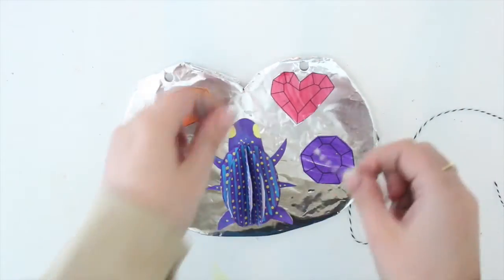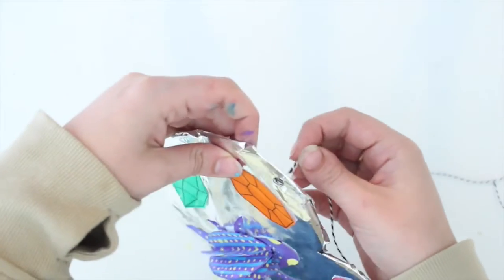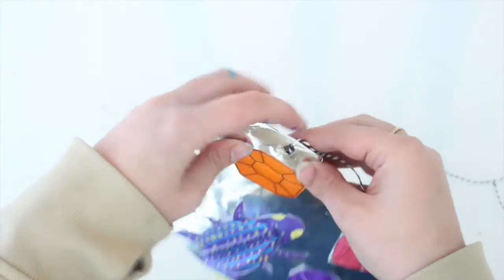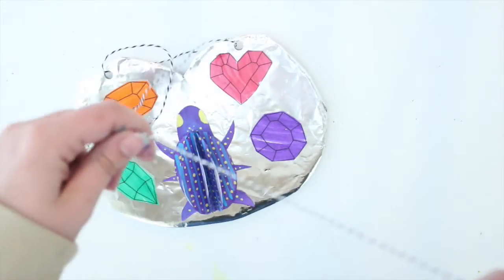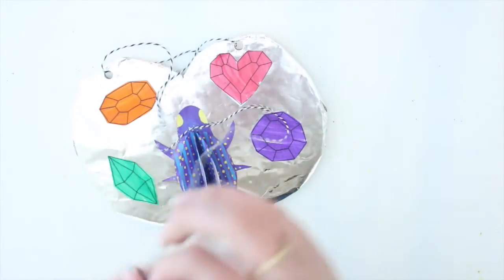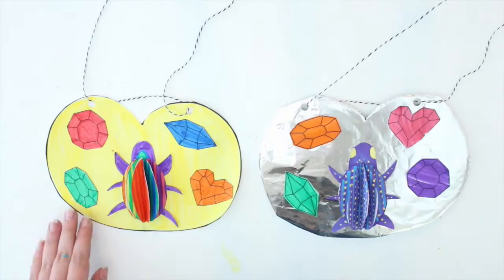Here is my other amulet all finished. This is how I put the string through a different way, just in case you didn't like the other way of doing it. Then you only have one knot on your amulet string. I also switched out the string for something that was a little bit more flexible and softer.